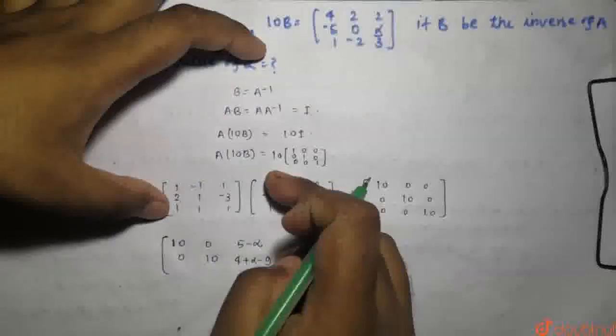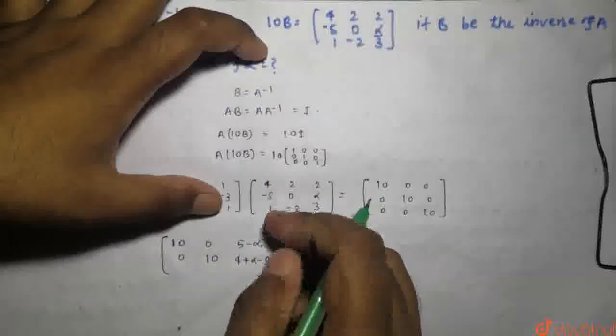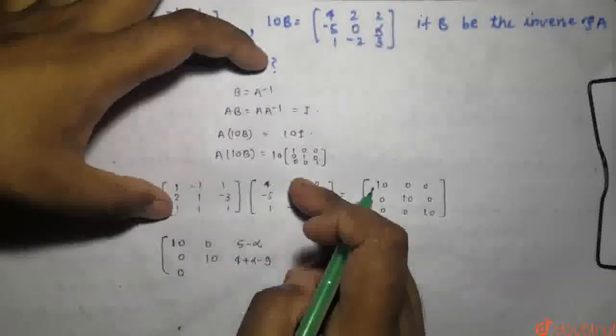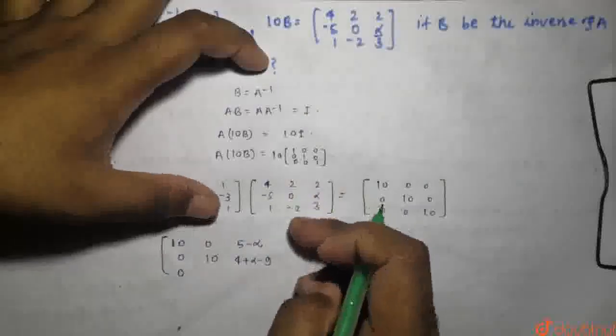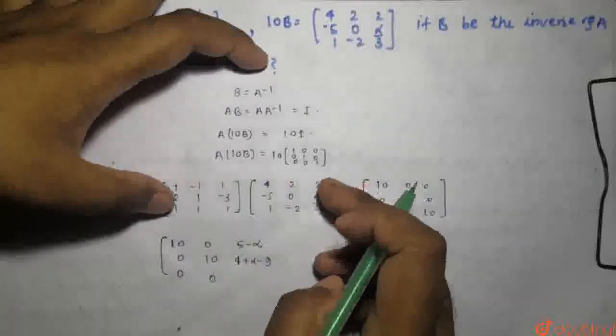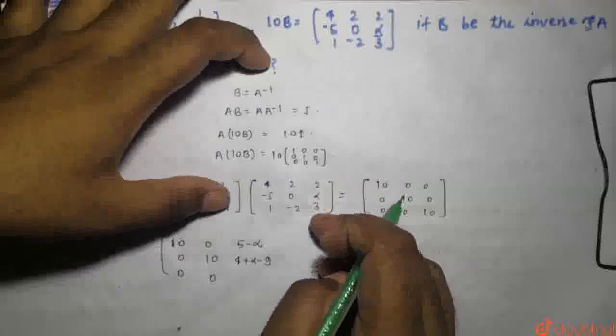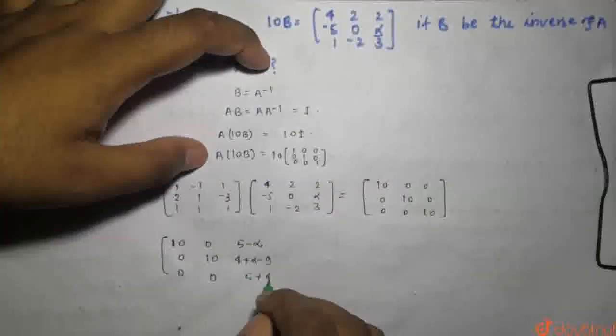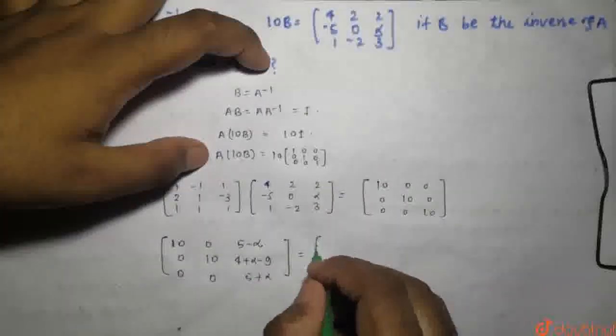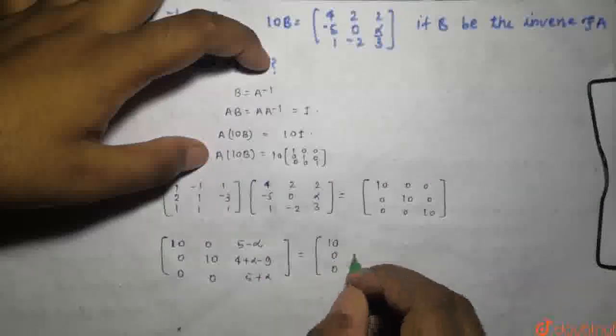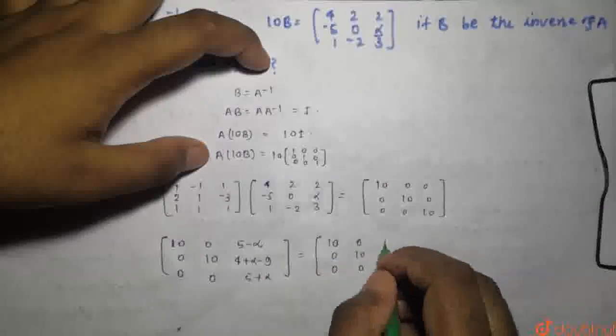Second row: 4 minus 5 minus 1 plus 1 is 0. Then 2 plus 0, 2 minus 2 is 0. And 2 plus alpha plus 3 is 5 plus alpha.